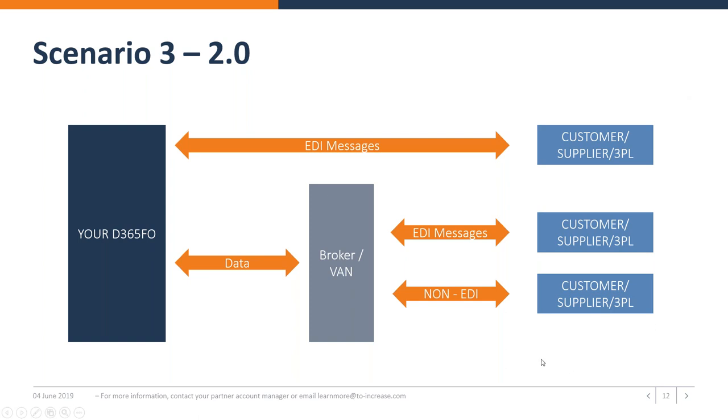Brokers and VANs can also offer a web portal where customers place their orders or suppliers post their invoices. In that way, the ERP receives everything through the same channel and business users can handle all orders in the same way. That is really a digital transformation, and it's something we see more and more and want to promote.